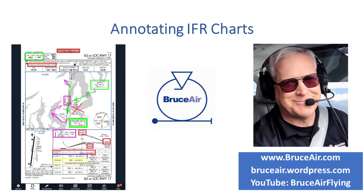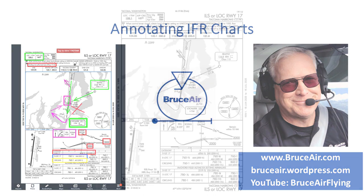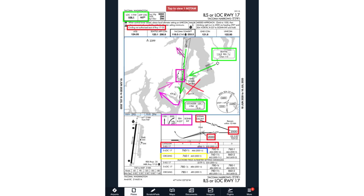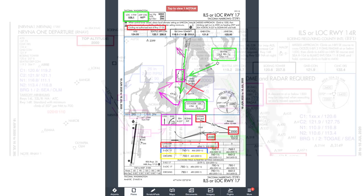This presentation shows how you can use annotations to highlight important information on electronic charts. Here's a chart for a typical instrument approach, the ILS or Localizer Runway 17 at Tacoma, Washington. It's certainly usable as is, but you can make setting up for, briefing, and flying such an approach much easier and less stressful if you mark up the chart.